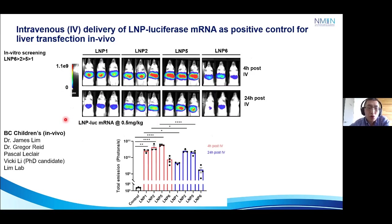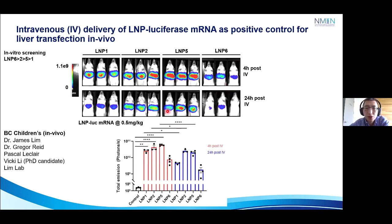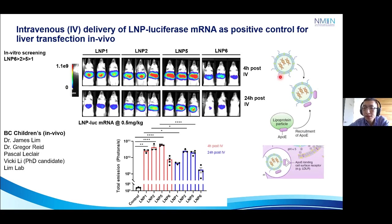Next, we wanted to see if our LNP formulations can be translated in vivo. This study was done in collaboration with BC Children's Hospital, led by Dr. James Lim and Gregory Reed, for providing the imaging systems and animals, as well as Vicky for assistance in intravenous injections. Our in vitro screening showed LNP-6 was the best in vitro, but for in vivo, LNP-6 was actually the least effective — possibly due to the different environment in which the LNP is bathed. LNP-5 showed the highest transfection compared to other formulations, though the signal reduces over 24 hours as expected. The mechanism by which LNPs enter hepatocytes is through APOE LDL receptors present on the hepatocytes.